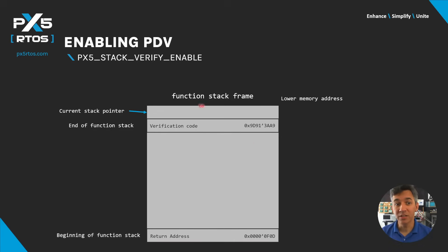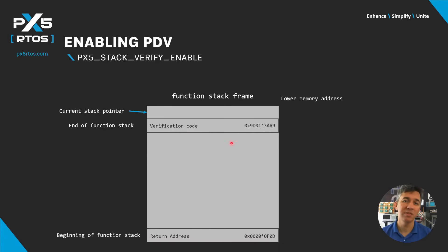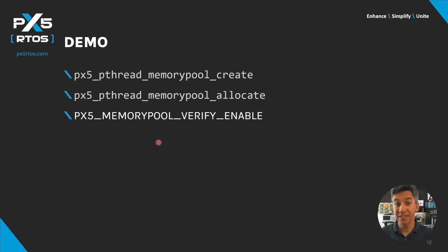Before the function exits, the verification code is computed again to help verify stack integrity. If either the verification code or the return address are overwritten, PDV will detect this and call the central error handling. This helps applications find the source of stack override problems sooner and also prevents hackers from corrupting the stack for remote execution attacks.